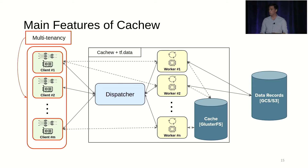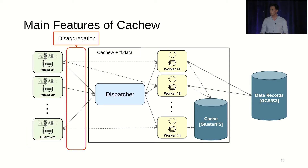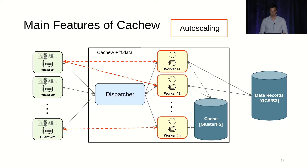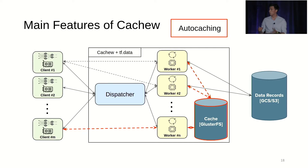The main features of CacheU are multi-tenancy, the disaggregation inherited from TF Data Service, the auto-scaling policy, and the auto-caching policy — which allows you to decide if caching makes sense and where, and can also be applied across jobs.